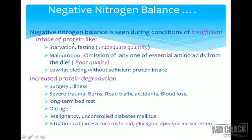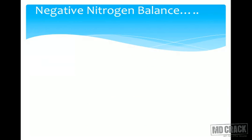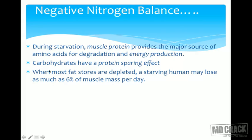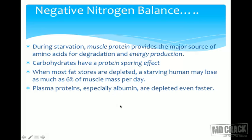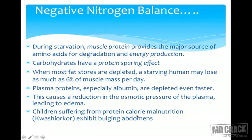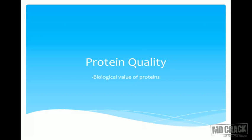Another cause of negative nitrogen balance is increased protein degradation, seen in surgery, illness, severe trauma, burns, road traffic accidents, blood loss, long-term bed rest, old age, malignancy, uncontrolled diabetes mellitus, and excess corticosteroid, glucagon, or epinephrine. During starvation, muscle protein provides the major source for energy production; carbohydrates have a protein-sparing effect. When most fat stores are depleted, a starving human may lose as much as 6% of muscle mass per day. Plasma proteins, especially albumin, are depleted even faster, reducing colloid osmotic pressure and leading to edema — as seen in children with protein-calorie malnutrition like kwashiorkor, who exhibit bulging abdomens.